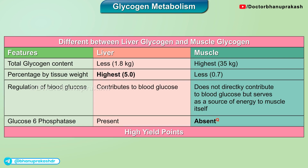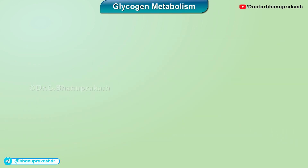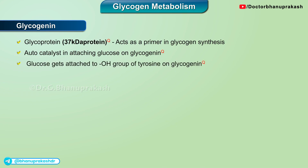A high yield point to be noted is that after 12 to 18 hours of fasting, liver glycogen is almost totally depleted. Glycogenin is a glycoprotein, which is a 37 kilodalton protein that acts as a primer in glycogen synthesis. It acts as an autocatalyst in attaching glucose onto glycogen. Glucose gets attached to the hydroxyl group of tyrosine on glycogenin.